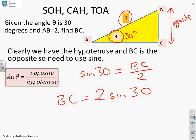Now, you may not know this, but sine 30 is actually a half, so I get 2 times a half, which is 1. So BC is 1.